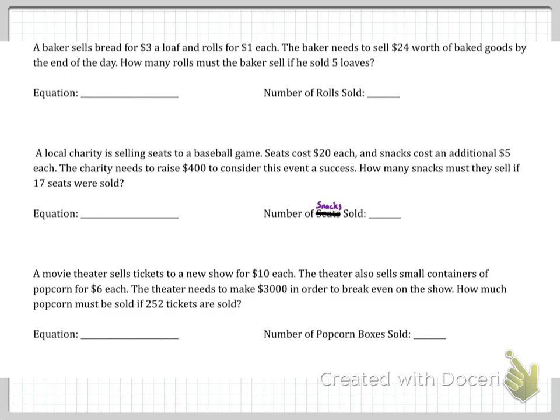A baker sells bread for three dollars a loaf. That's going to be x. And rolls for one dollar each. The number of rolls is y. And we need a total of 24 dollars. So our equation is 3x plus 1y equals 24. Five loaves. Loaves we already said was x. So x equals 5. Plug in 5. 15 plus y equals 24. Subtract 15 from both sides and you get the number of rolls needed is 9.